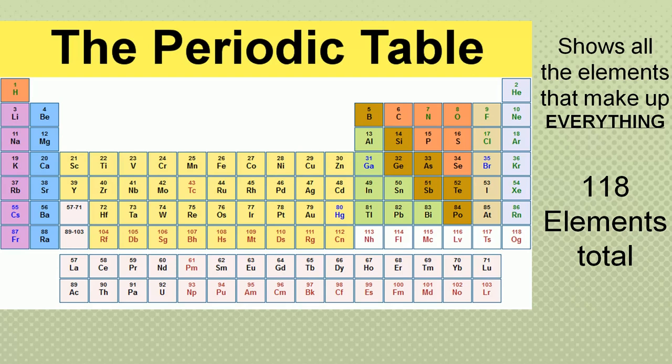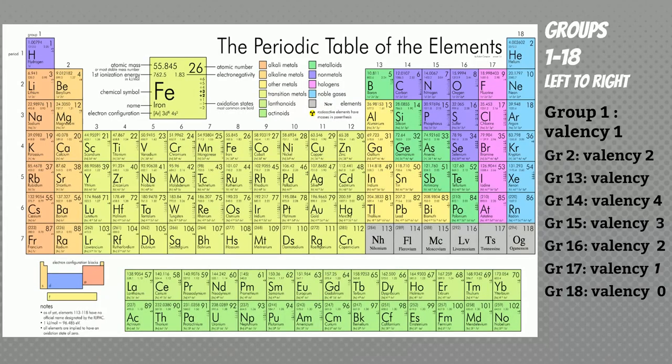Do you know who proposed it? This periodic table is also called the long form of periodic table. It shows all the elements that make up everything. There are 118 elements. This is the modern periodic table.